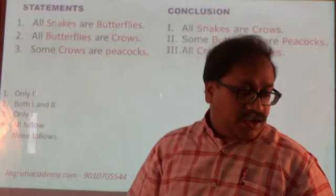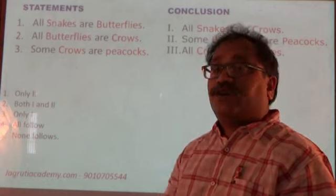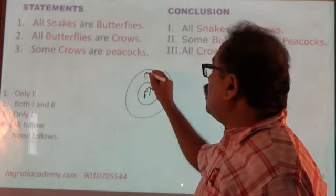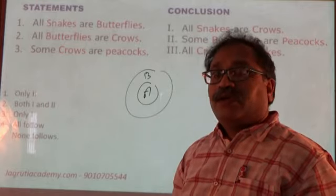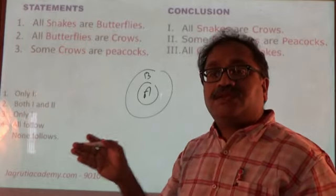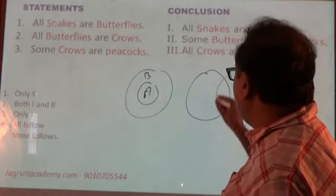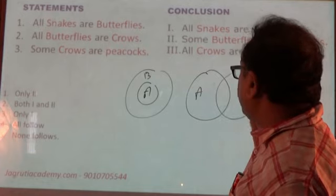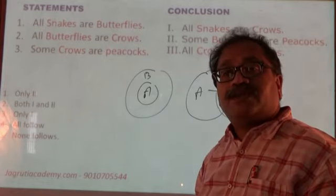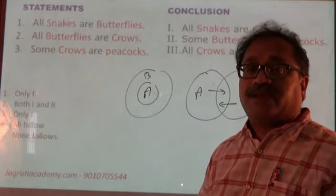What we know is: when all A's are B's, how do we draw the diagram? This is A and this is B — all A's are B's. If I have to draw a diagram when some A's are B's, this is A and this is B and some A's are B's. Here some A's are B's, and the reverse is also true: some B's are A's.